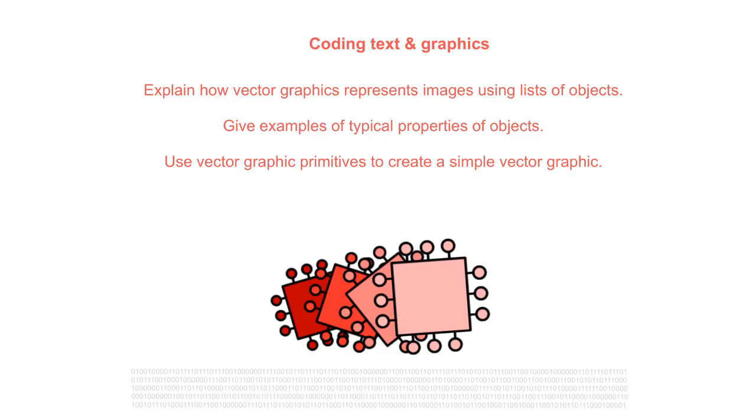In this video we're going to explain how vector graphics represent images using lists of objects. We'll give some examples of typical properties of objects and we'll use vector graphic primitives to create a simple vector graphic.